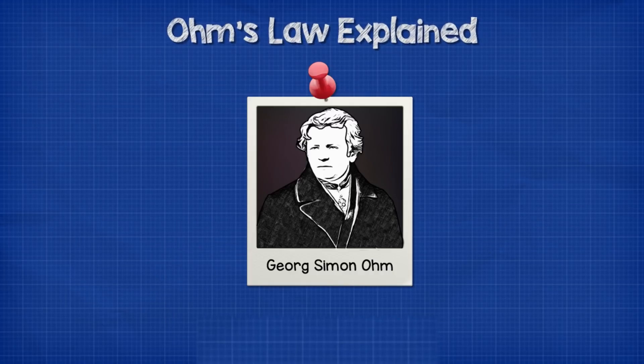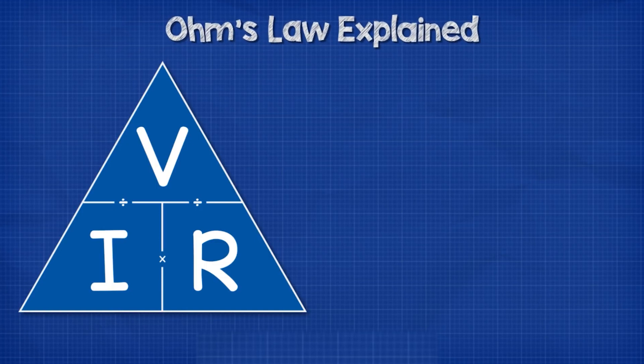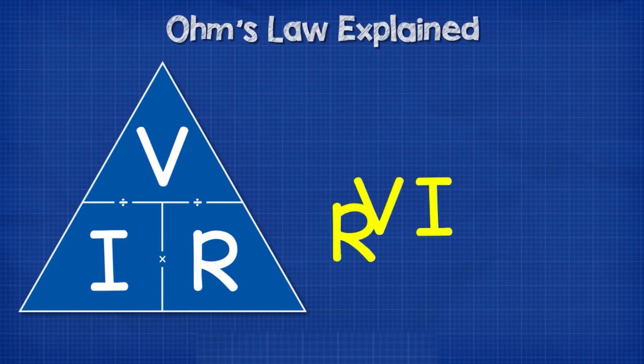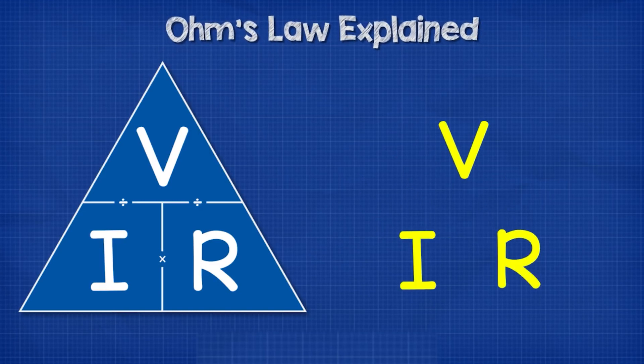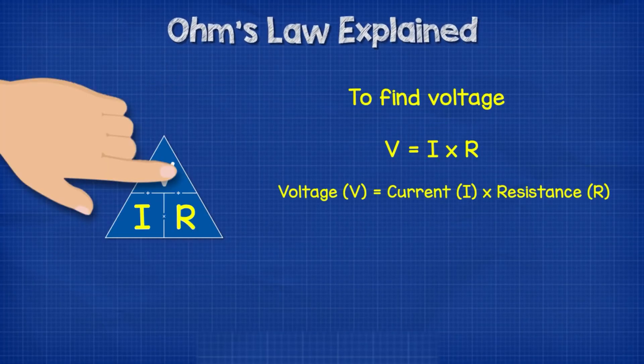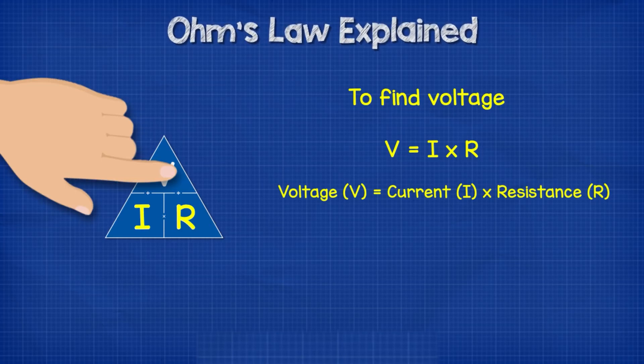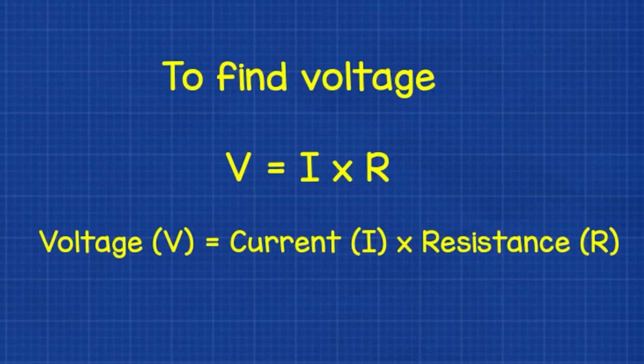Ohm's law states that the current flowing through a conductor between two points is directly proportional to the voltage across those two points and inversely proportional to the resistance. It is represented by the equation delta V equals IR, where delta V is the voltage, I is the current, and R is the resistance.